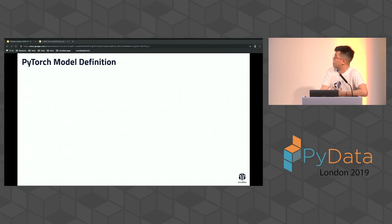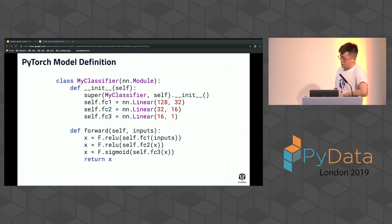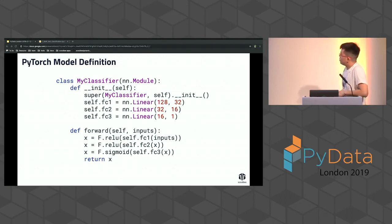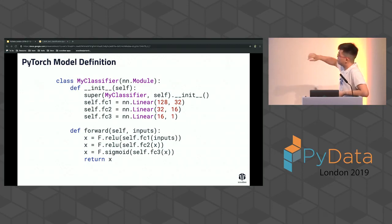Now that you've loaded your data, how do you define your model? Here's a very basic feed-forward network in PyTorch. It inherits from nn.Module — basically neural net module. You say you want to create your first classifier, which is a binary classifier of zero and one. When initializing it, you give it three layers: FC1, FC2, FC3. They're all linear layers.